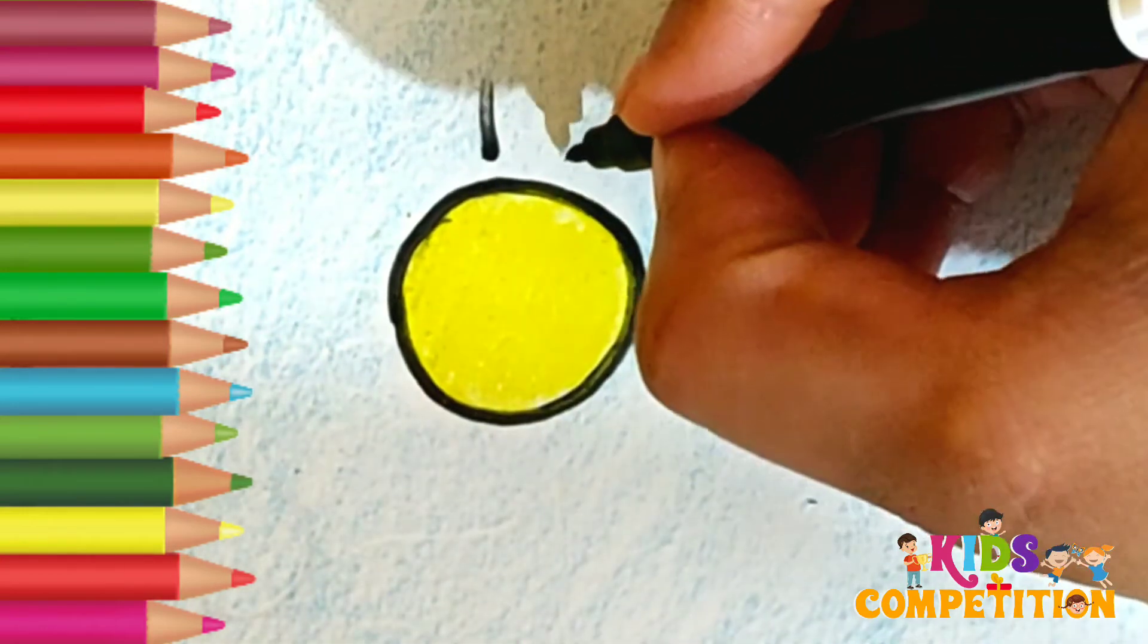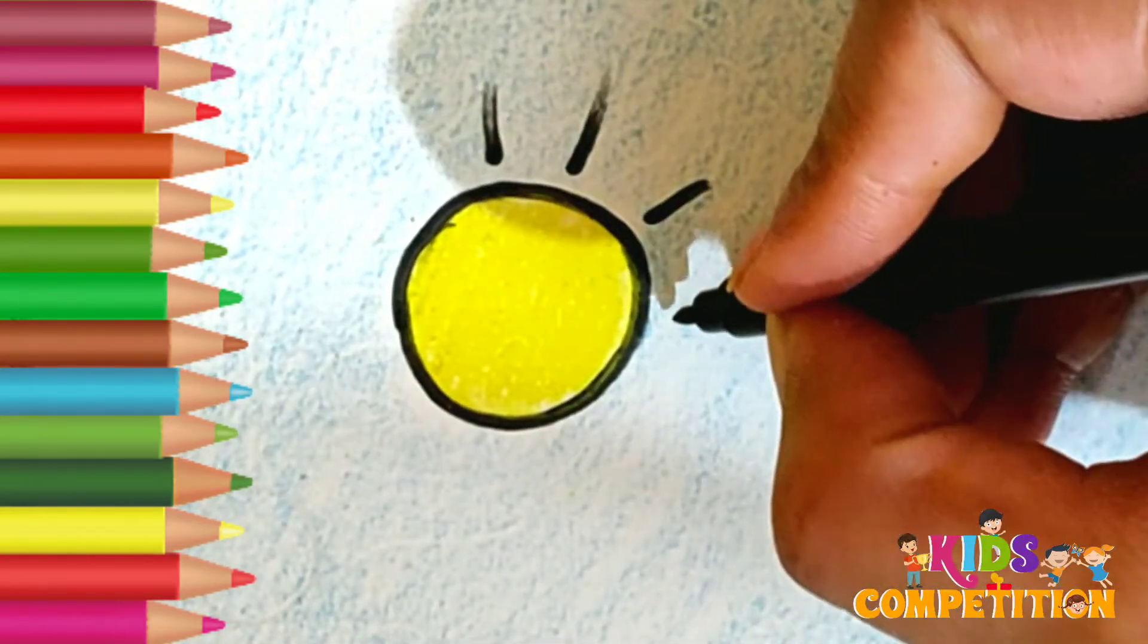Now we will draw the rays of the sun with black sketch color.